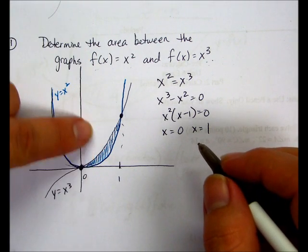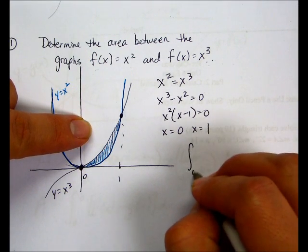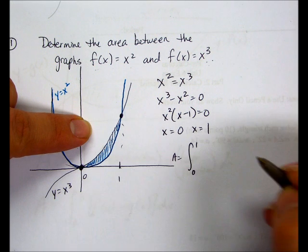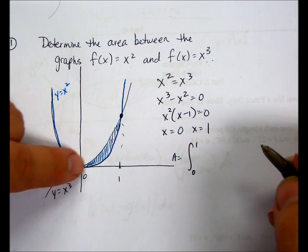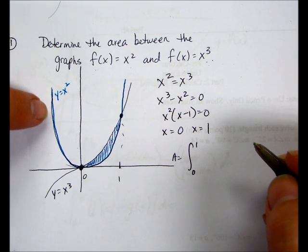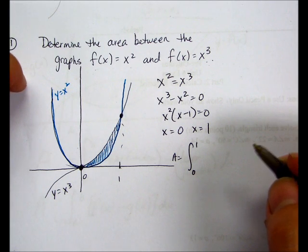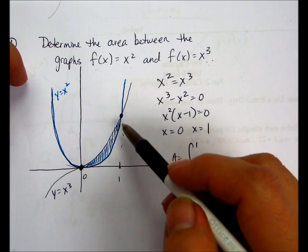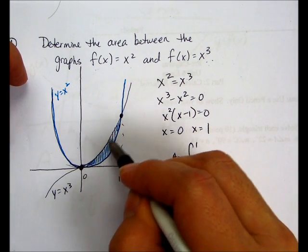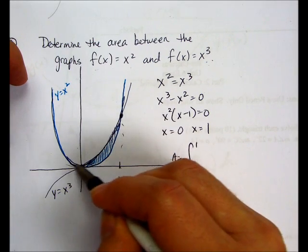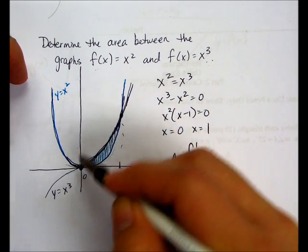So to find the area between these two curves, we're going to take the integral from zero to one of the upper function. In this case, the upper function is x squared. I drew this wrong. I'm sorry. x squared is the upper function. And x cubed is the lower function.